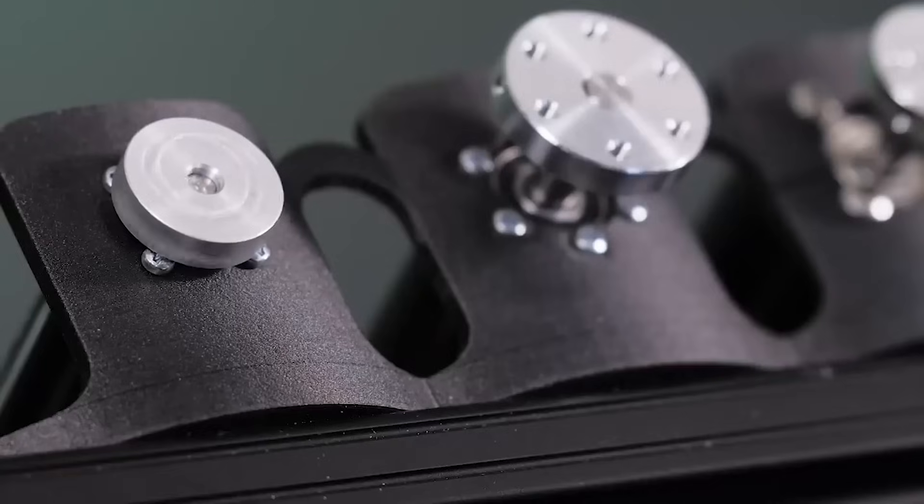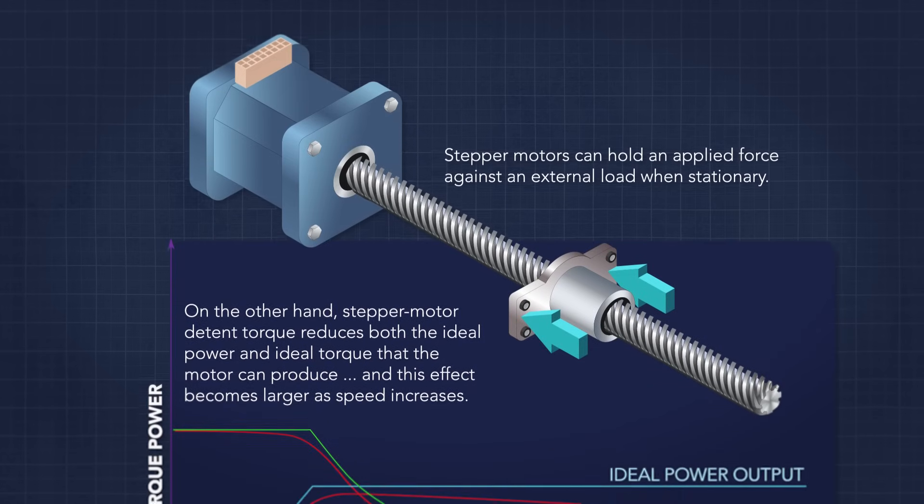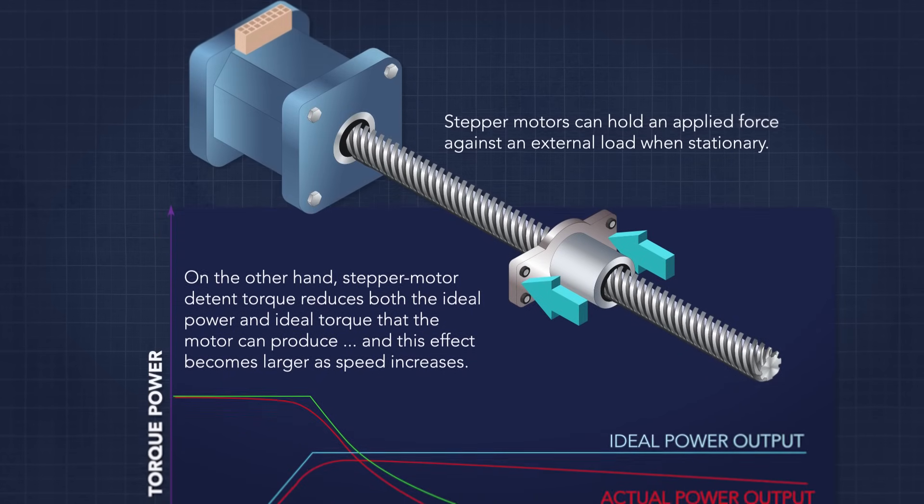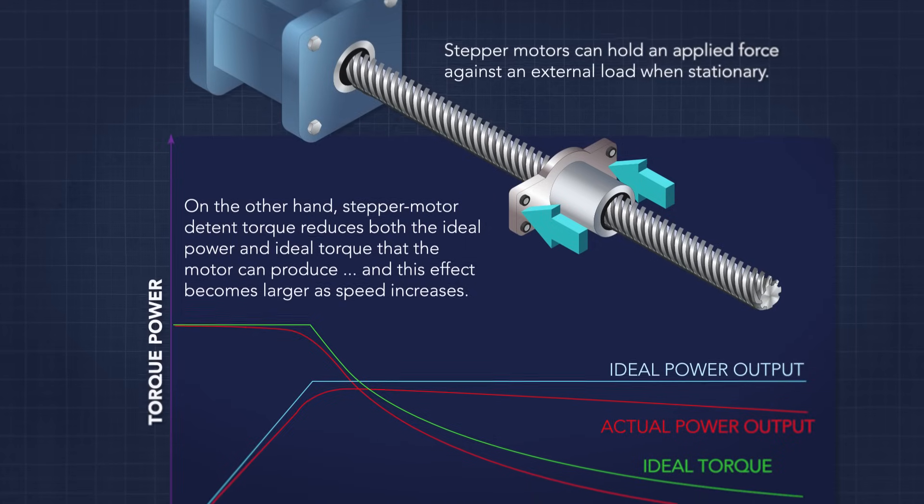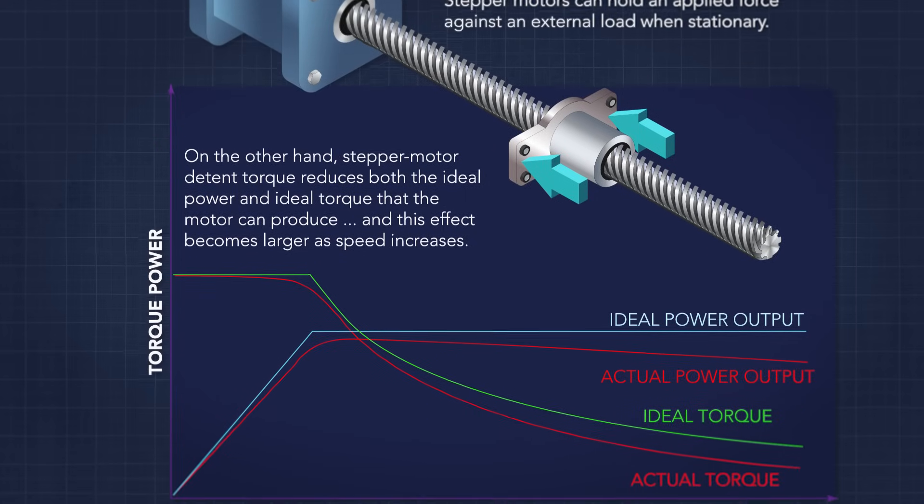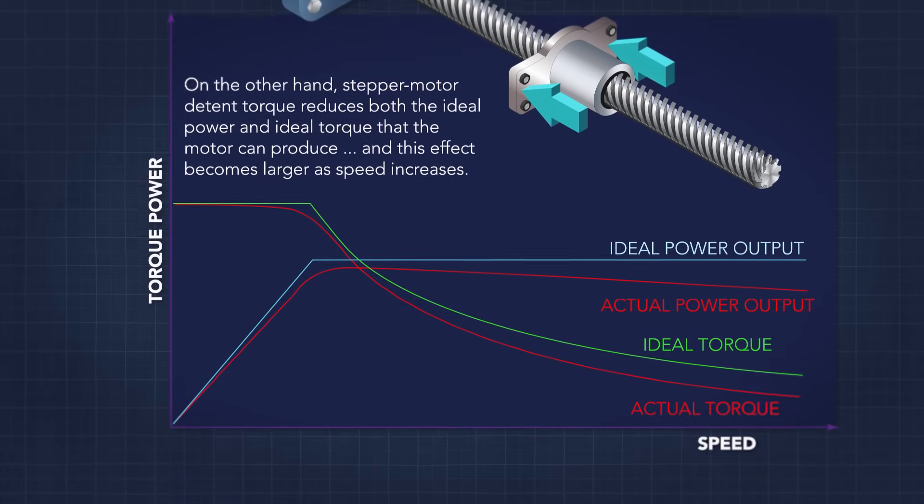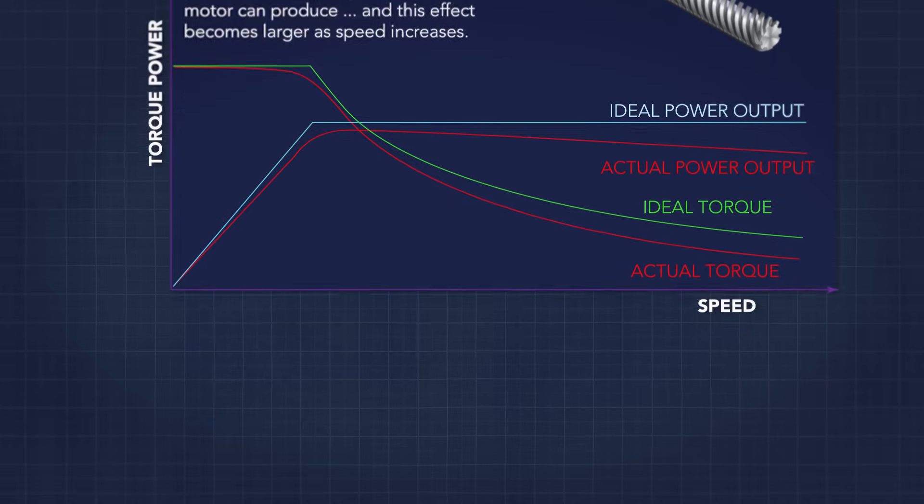They excel where control of rotation angle, speed, and position is the top objective. A few drawbacks are that not properly controlling the motor can produce undesired system resonance. Also, stepper motors are generally not easy to operate at extremely high speeds. As motor speed increases, torque decreases.